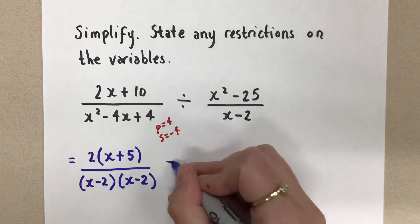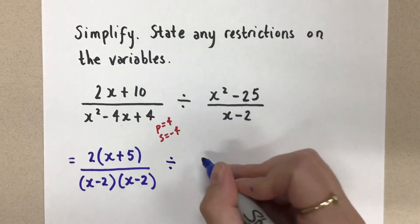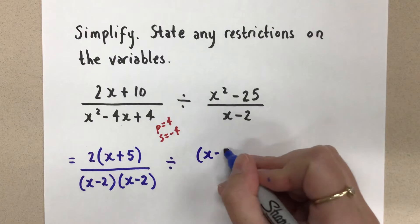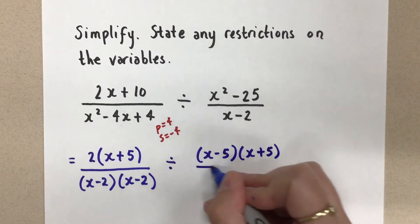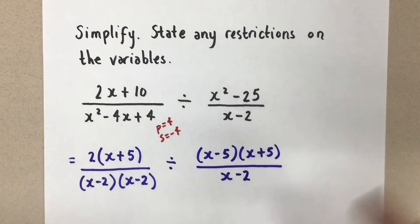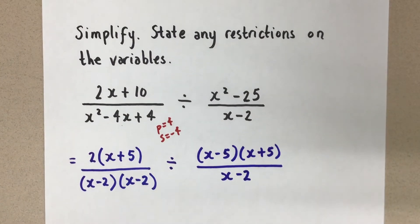Okay, divided by, and then here, the x squared minus 25 is a difference of squares, so we'll have x minus 5, x plus 5, and x minus 2 in the denominator there. Okay, everything is factored.